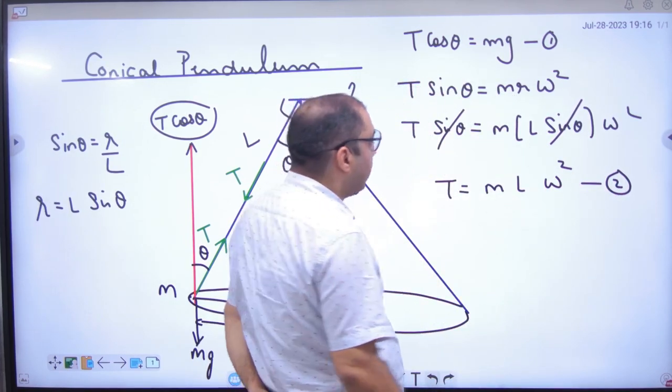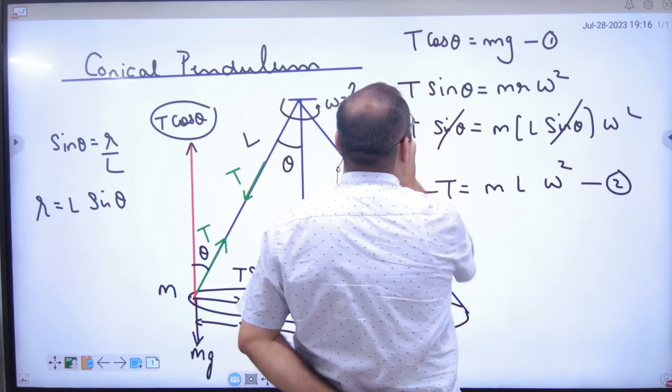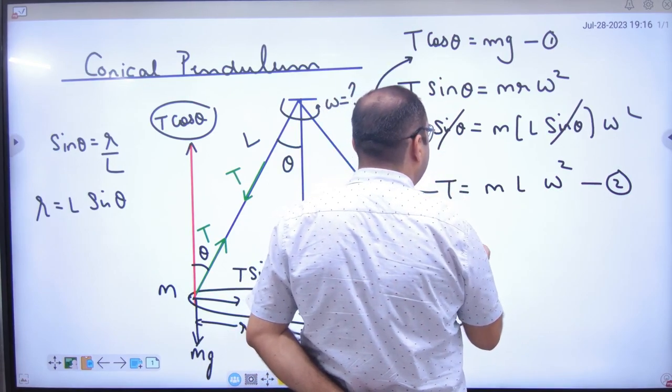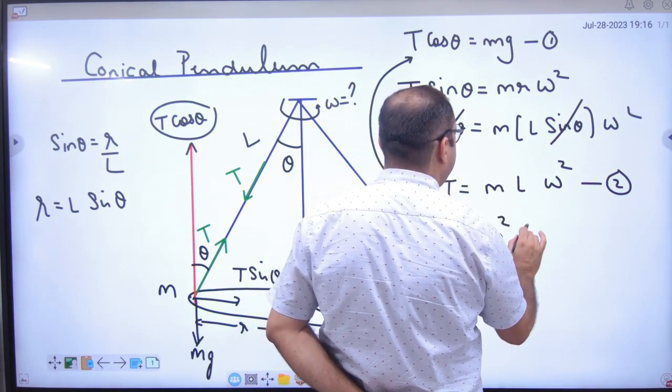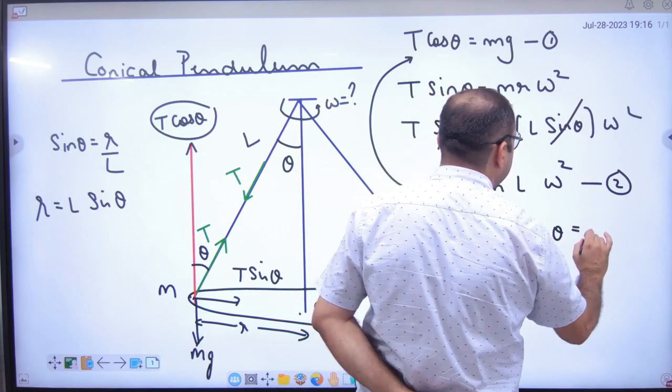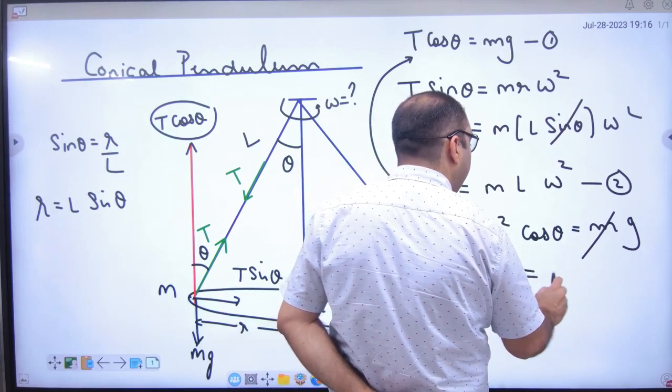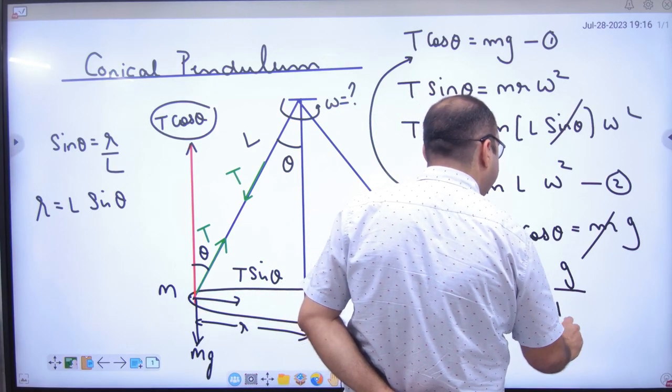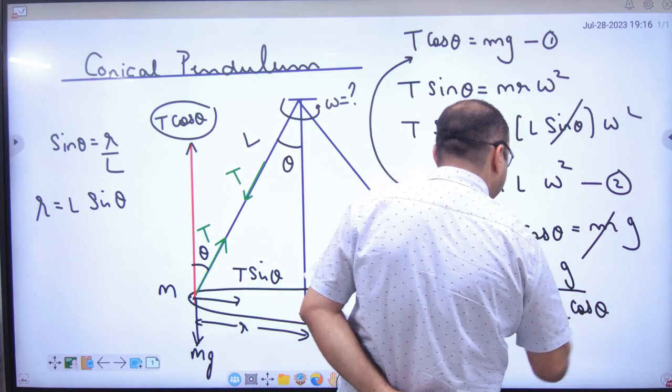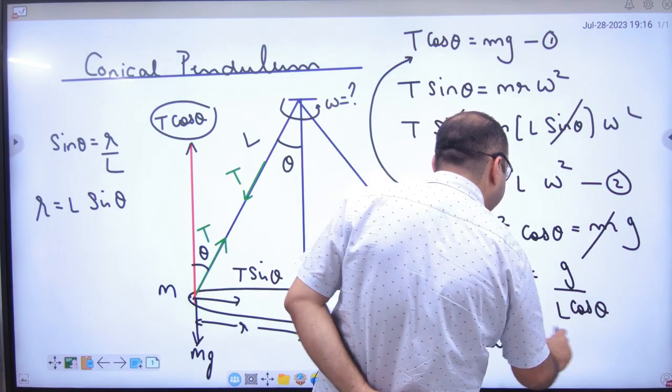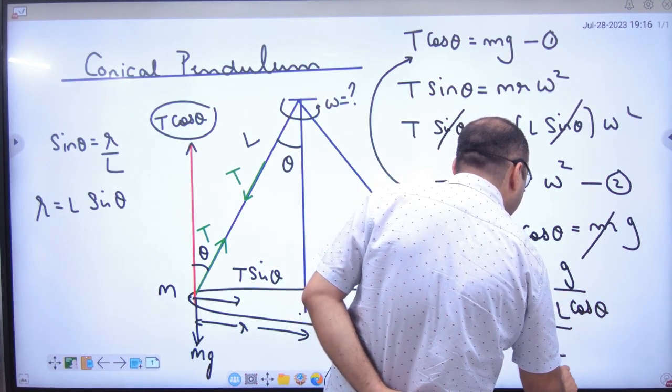We work from here. We put this T here. So M L omega square cos theta equals M G. M cancels. Omega squared value is G divided by L cos theta. Omega value is under root of G divided by L cos theta.